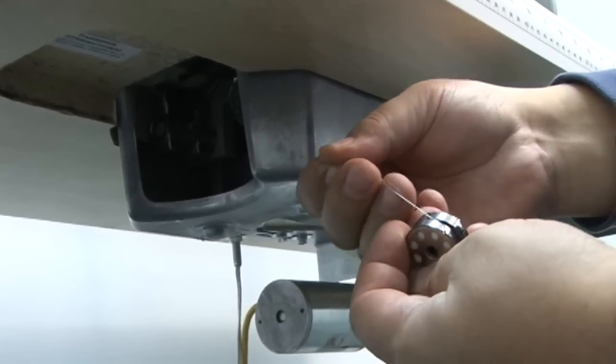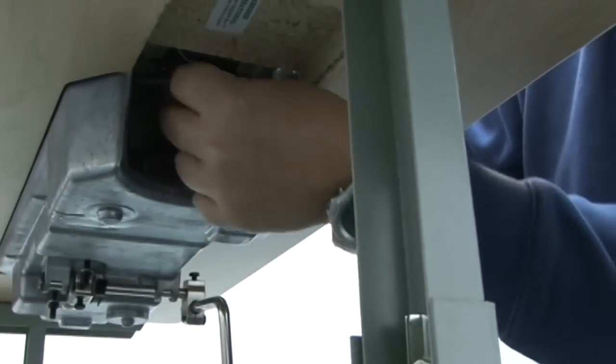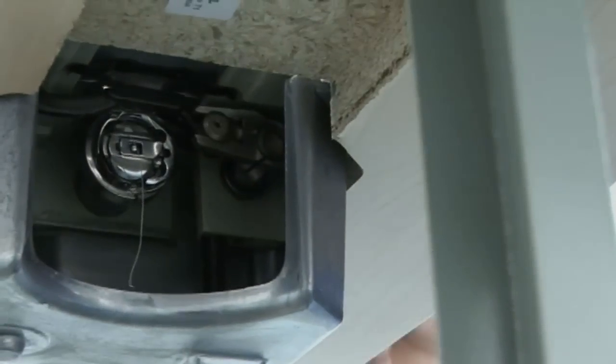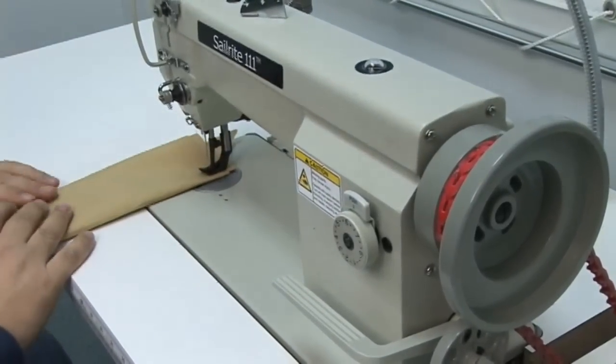Then underneath the sewing machine there is an oil pan. This machine is fully lubricated with an oil pump, but there's a hole here that you can install the bobbin case. No need to tilt the machine up.